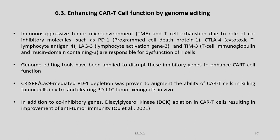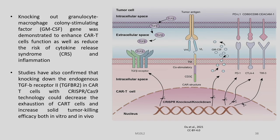Genome editing tools have been applied to disrupt these inhibitory genes to enhance CAR T-cell function. CRISPR-Cas9-mediated PD-1 depletion was proven to augment the ability of CAR T-cells in killing tumor cells in vitro and clearing PD-L1-positive tumor xenografts in vivo. In addition to co-inhibitory genes, diacylglycerol kinase ablation in CAR T-cells, resulting in improvement of anti-tumor immunity, has been reported.